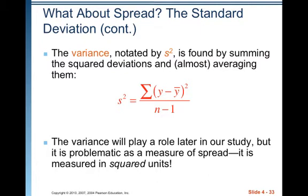Technically, what we're dividing by is something called degrees of freedom. Whenever you have N items, there are only N minus 1 degrees of freedom for finding the standard deviation or variance, because that last value is fixed. That's the more mathematical reason why we divide by N minus 1, and the more empirical reason is simply that it gives us a better value.